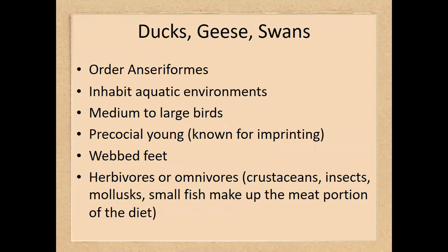Ducks, geese, and swans are the order Anseriformes. They are also found in aquatic habitats and are medium to large birds. Their precocial young are known particularly for imprinting, and can imprint on things that are not in fact their parents. They have webbed feet.